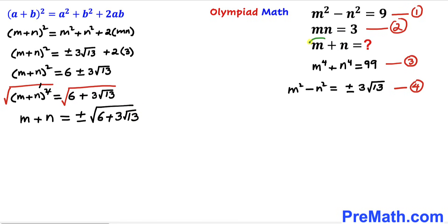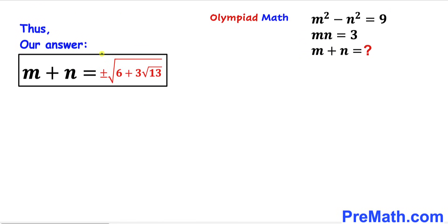So after all the calculations and manipulations, our m plus n value turns out to be positive or negative square root of (6 plus 3 times square root of 13). That's our final answer. Thanks for watching and please don't forget to subscribe to my channel for more exciting videos. Bye!